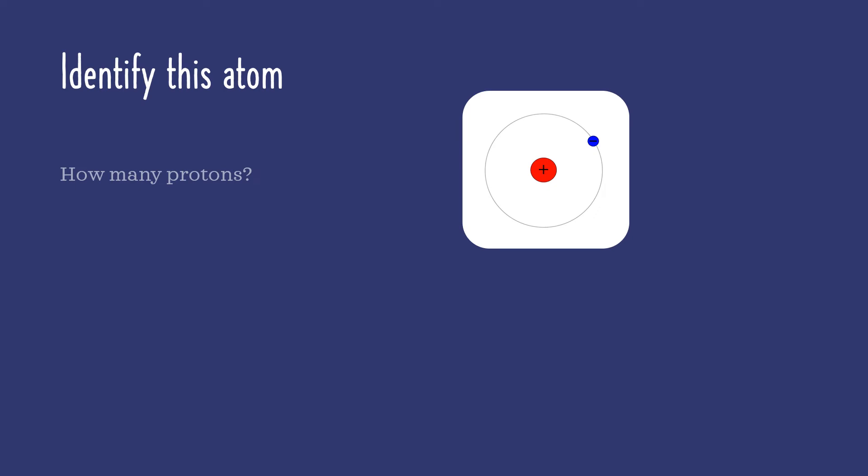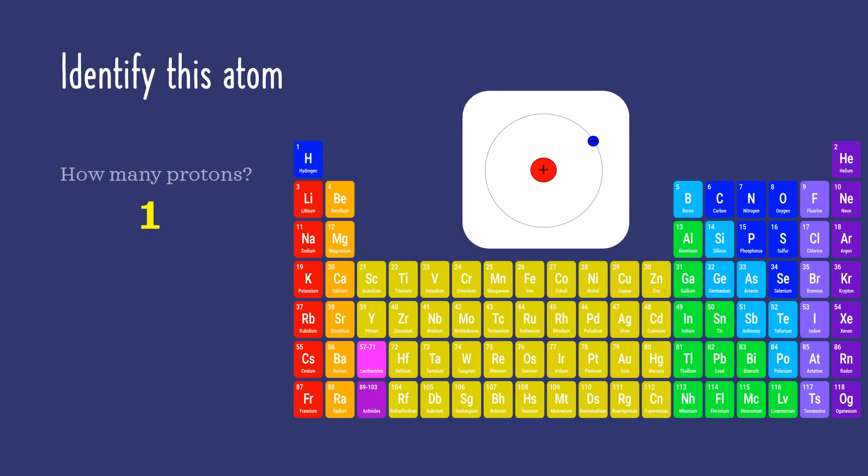Now test what you've learned by identifying what element this atom is. Remember, you count up the protons. Here, there's just one. Looking at the periodic table, the element whose atoms have just one proton is called hydrogen, or capital H for short.